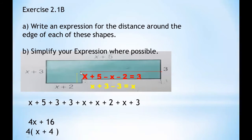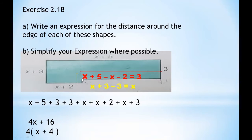Simplify your expression where possible. Now look at the shape. The given dimensions are: x+5, x+3, x+2, and one side is 3. However, this side is missing and this small side is also missing. To find the perimeter, we need all the sides, so we need to find these two missing sides.